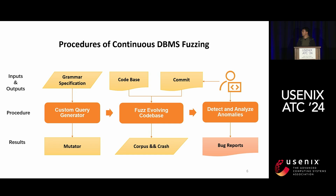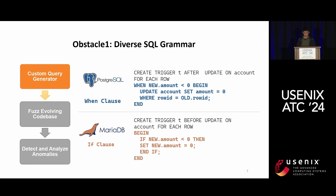We encounter obstacles in each step. The first obstacle is diverse SQL grammar, causing difficulties in test case generation. Different DBMSs have unique syntax — for example, the grammars for trigger creation differ greatly even among the most popular DBMSs. For PostgreSQL, you must create a function and use the EXECUTE PROCEDURE clause to invoke the function, while for MariaDB, you use the IF-THEN clause. Tailoring the generator to the specificities of each DBMS ensures generated queries are compatible with the target system, enhancing testing effectiveness.